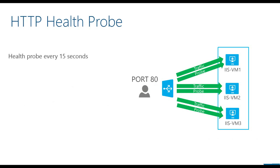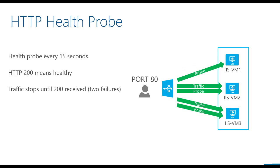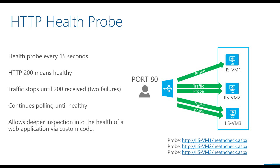HTTP health probes are very similar to TCP health probes. Instead of looking for a TCP ACK, the load balancer is looking for an HTTP 200 OK. If it receives something other than a 200 — a 401, a 500, a timeout, etc. — it takes the virtual machine out of rotation. Just like TCP, the load balancer continues polling, so when the virtual machine is healthy again, it will automatically be put back into rotation. The HTTP health probe allows you to provide custom code in the form of a web page to determine the health of your application, allowing for a much more thorough test.